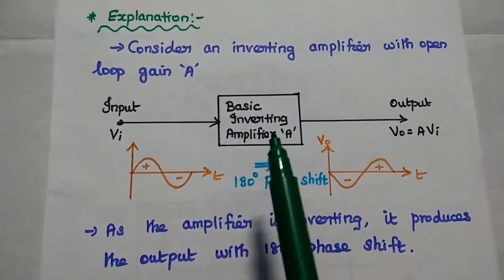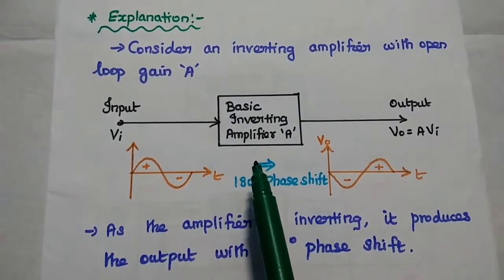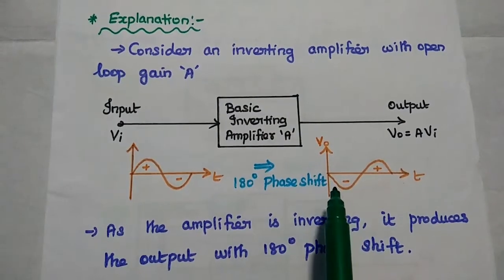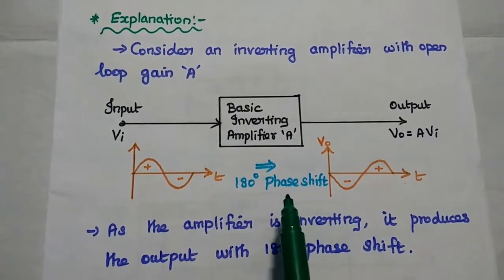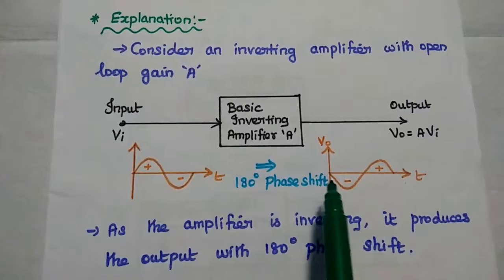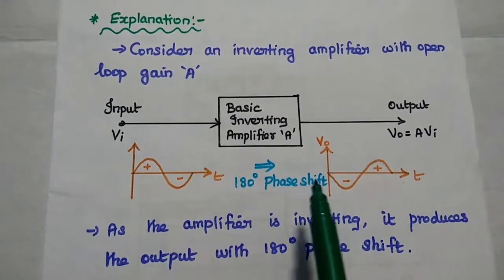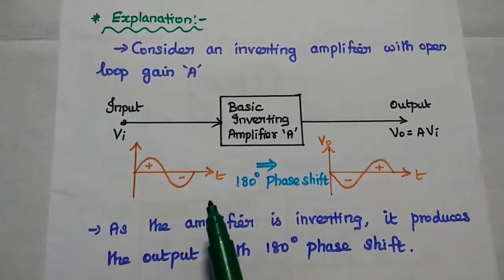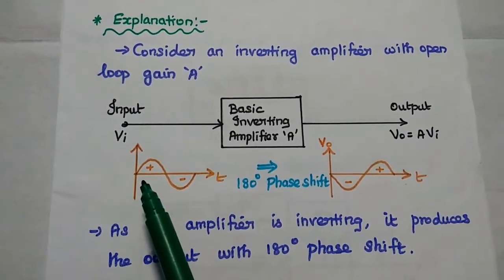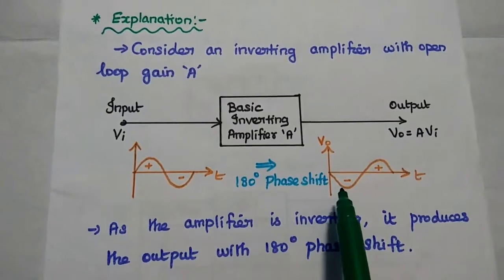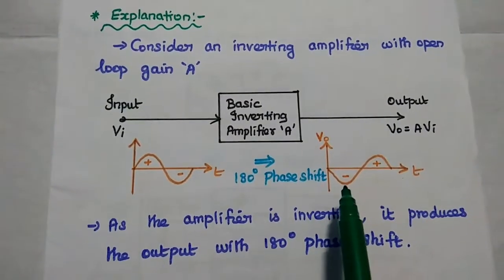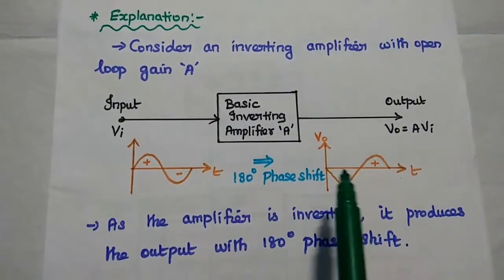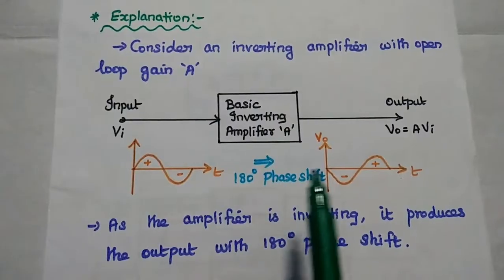Since the amplifier is an inverting amplifier, it produces a 180 degree phase shift. You can see this 180 degree phase shift in the waveform — here it starts from positive, and here it starts from negative. This is the basic inverting amplifier.